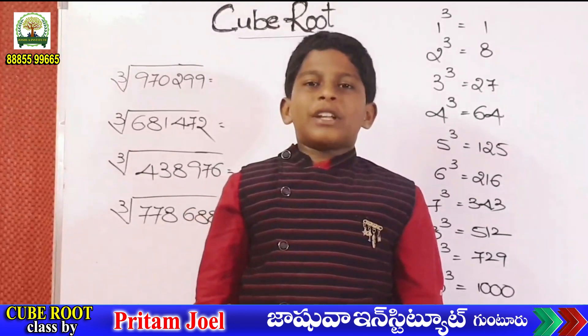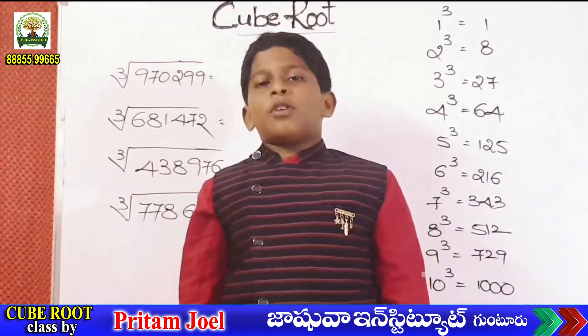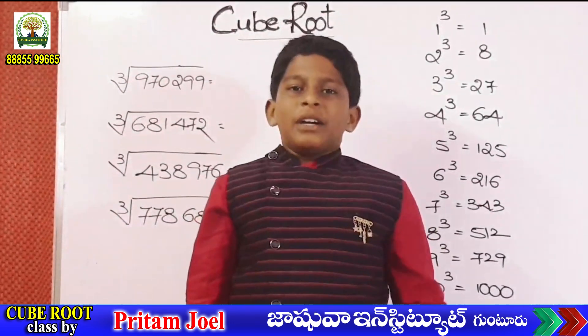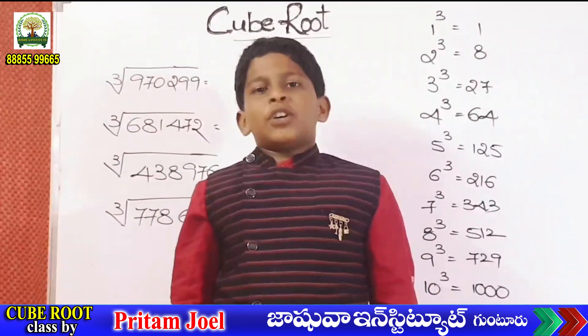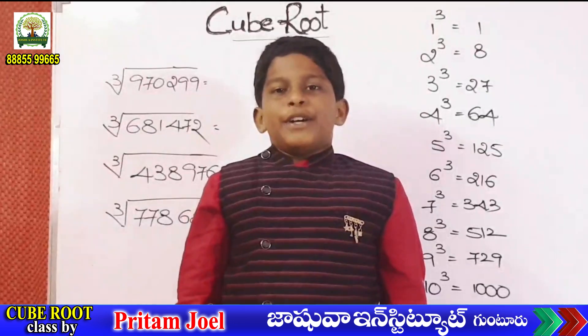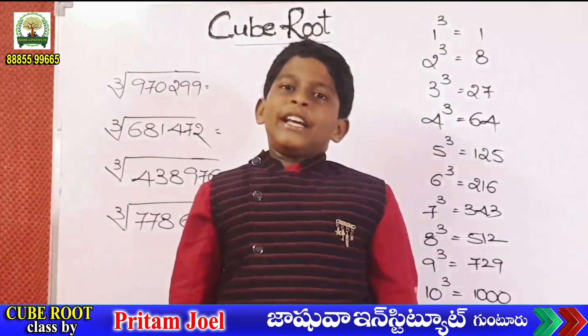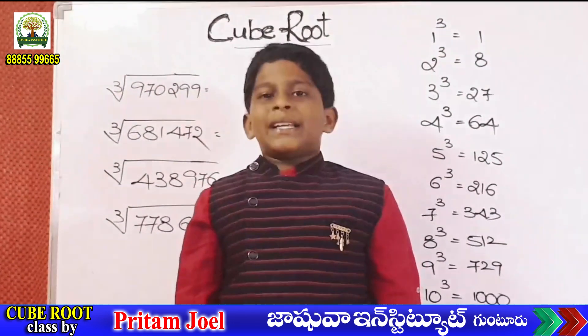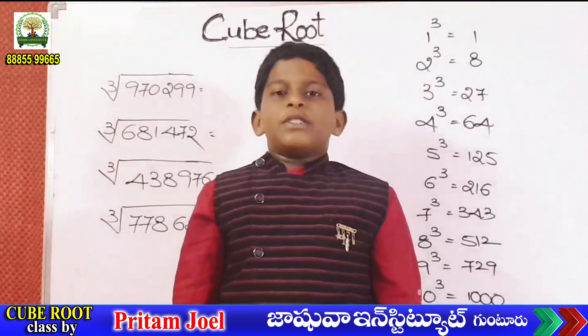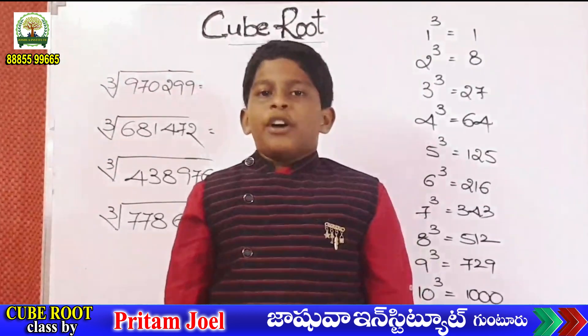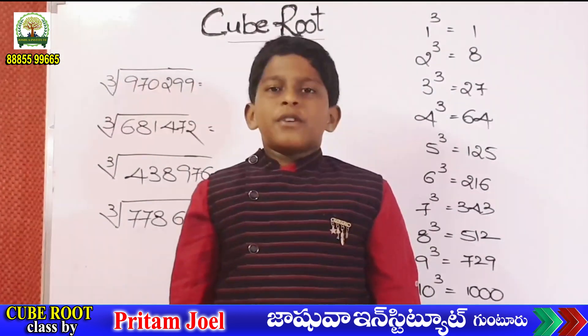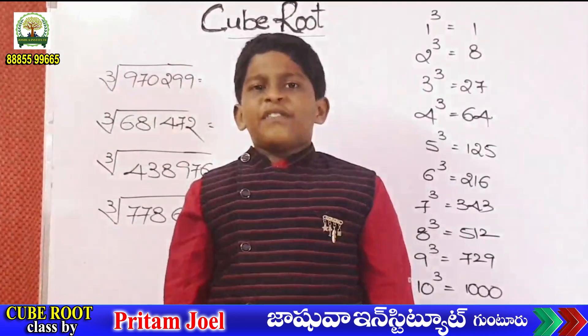1 cube is 1, 2 cube is 8, 3 cube is 27, 4 cube is 64, 5 cube is 125.